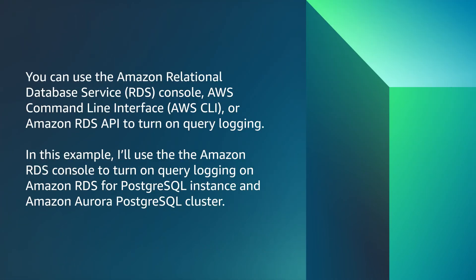You can use the Amazon Relational Database Service RDS Console, AWS Command Line Interface, or Amazon RDS API to turn on Query Logging. In this example, I will use the Amazon RDS Console to turn on Query Logging on Amazon RDS for Postgres Instance and Amazon Aurora Postgres Cluster.